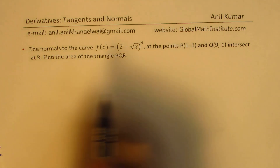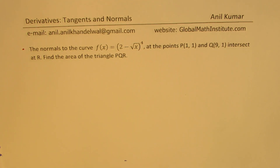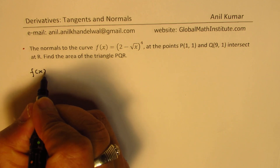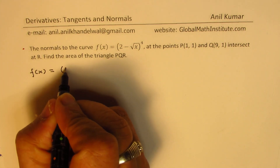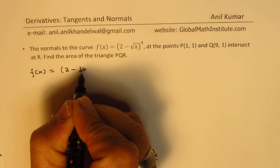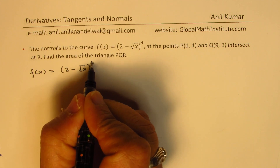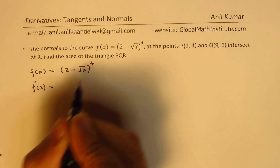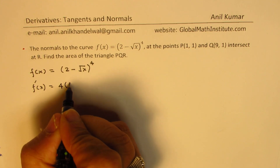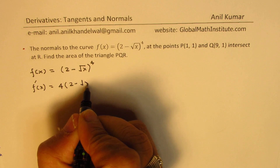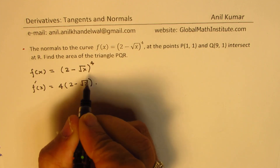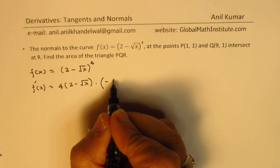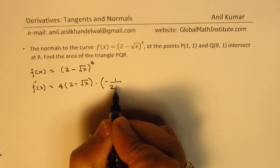Let's find first the equation of the normals. We are given the function f(x) = (2 − √x)⁴. The derivative f'(x) is 4 times (2 − √x)³ times the derivative of the inside function, which is −1 over 2√x.